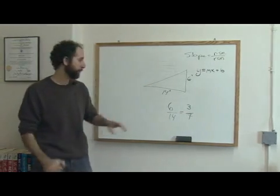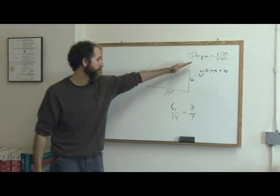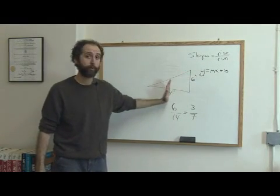So we'd say the slope of this ramp is 3/7. For every 3 feet it goes up, it goes over 7 feet.